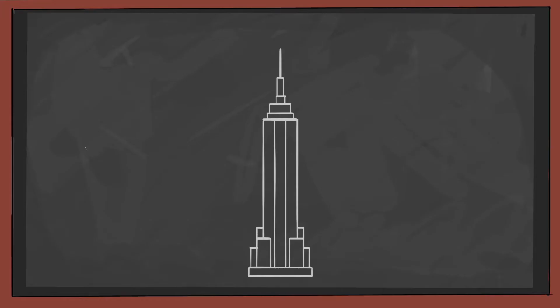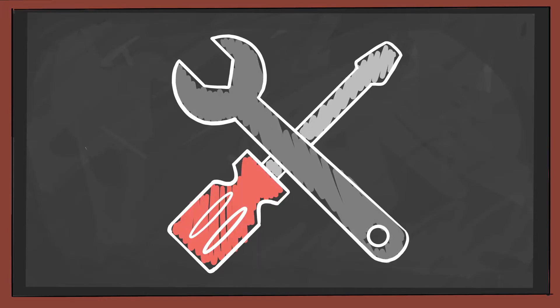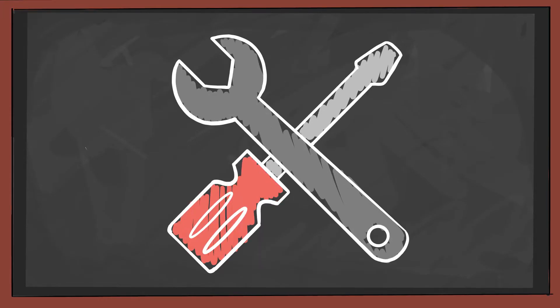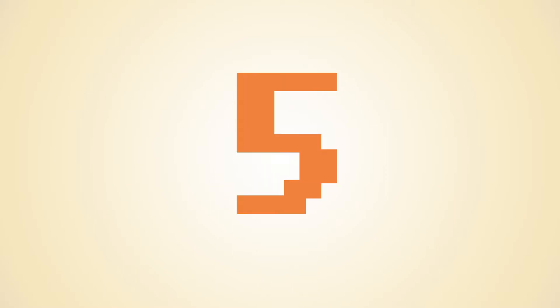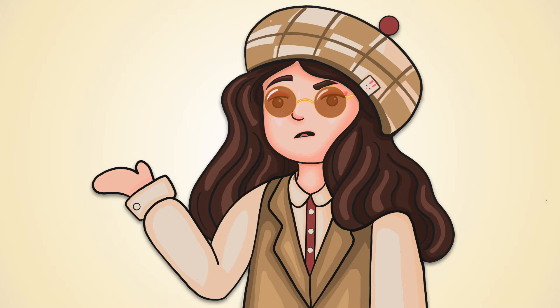Imagine a building. Before we start the construction, we need to prepare the ground and decide what kind of foundation we are going to put. There are five different types of story, and the big difference lies in the path they follow.